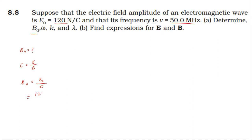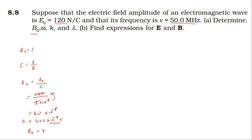B₀ = E₀/c = 120 divided by 3×10⁸. That gives 120/3 = 40, and 1/10⁸ = 10⁻⁸, so B₀ = 40×10⁻⁸ = 400×10⁻⁹ tesla. Therefore B₀ = 400 nanotesla.